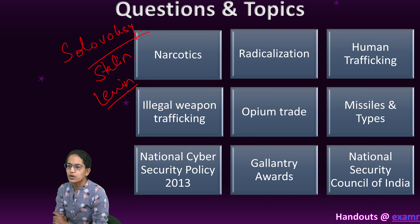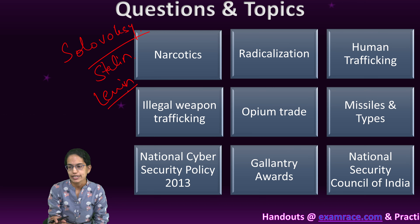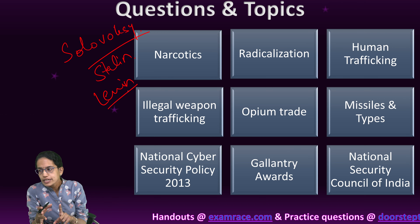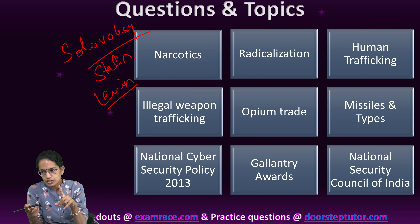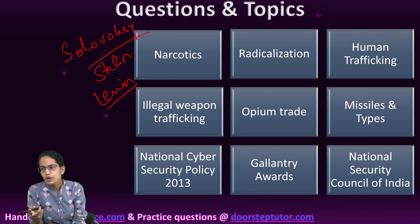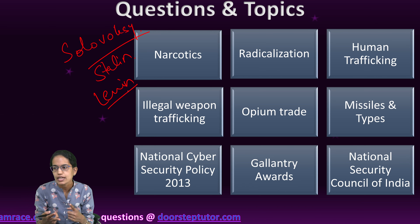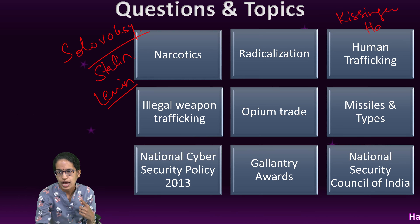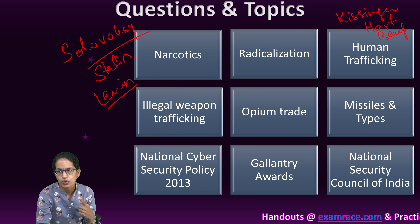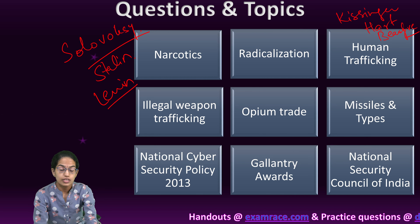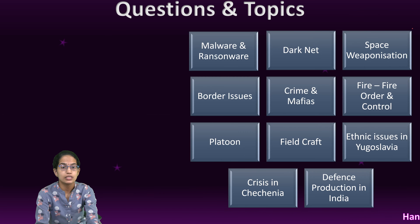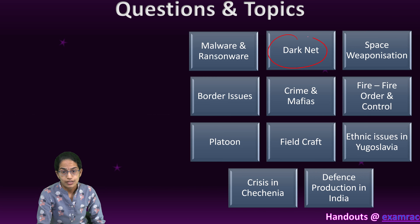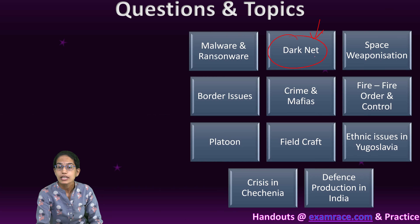Theories of nuclear deterrence, nuclear disarmament, and arms control are important. The roles of Kissinger, Liddell Hart, and Brodie are important for nuclear deterrence theories. The darknet is a very, very important topic — deep web searches, mafias, crime issues, and border issues.